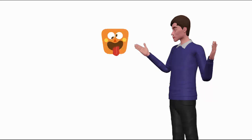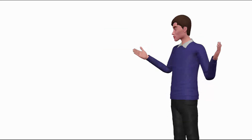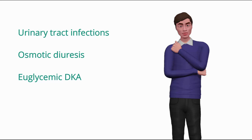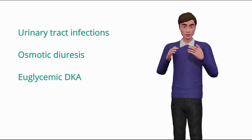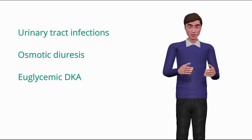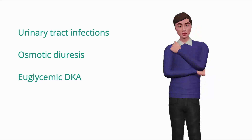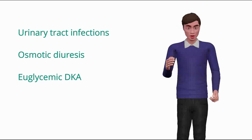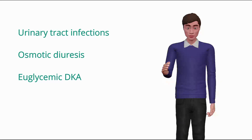Adverse effects of SGLT2 inhibitors include urinary tract infections and osmotic diuresis. Additionally, gliflozins can increase the risk of diabetic ketoacidosis — specifically, they cause euglycemic DKA.